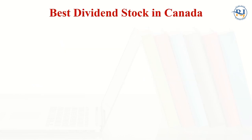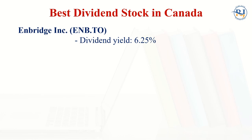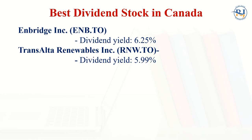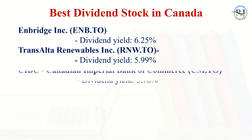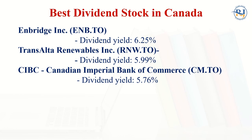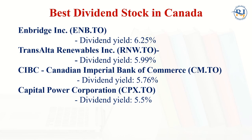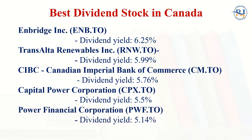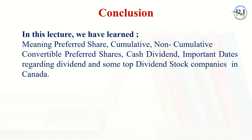The best dividend stocks in Canada include: Enbridge with a dividend yield of 6.25%, TransAlta Renewables with 5.99%, CIBC (Canadian Imperial Bank of Commerce) with 5.76%, Capital Power Corporation with 5.5%, and Power Financial Corporation with 5.14% per annum. In this lecture we have learned the meaning of preferred shares, cumulative, non-cumulative, convertible preferred shares, cash dividends, important dates regarding dividends, and top dividend stock companies in Canada.